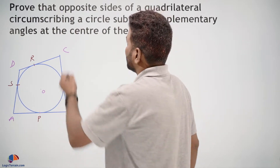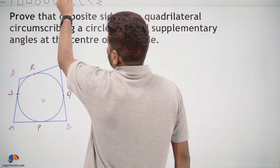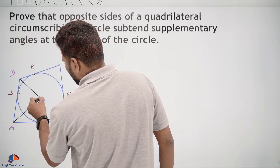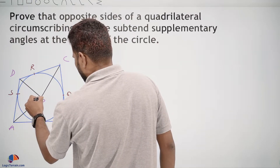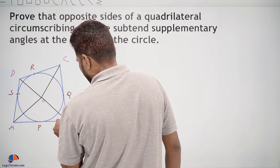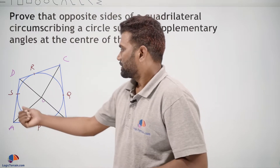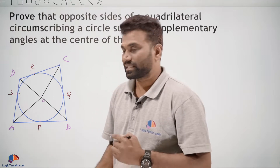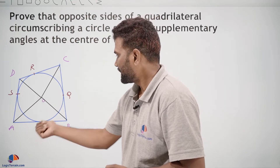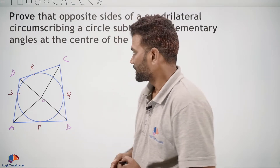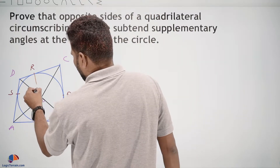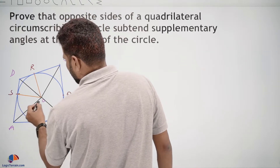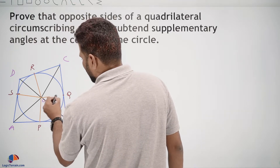For that, let us join AO, DO, CO, and BO. Here AB, BC, CD, and DA are sides of the quadrilateral touching this circle at P, Q, R, and S respectively. Now also join OR, OS, OP, and OQ.